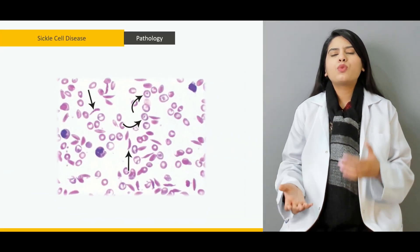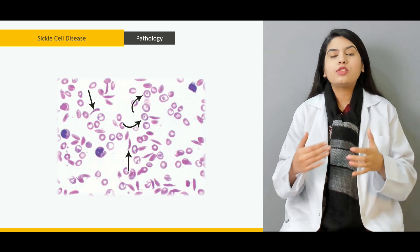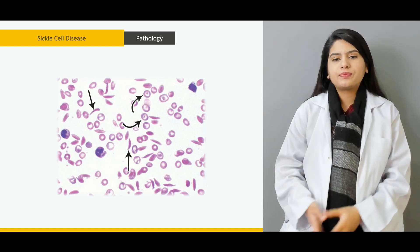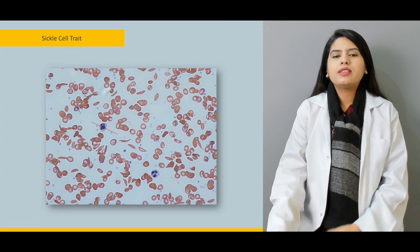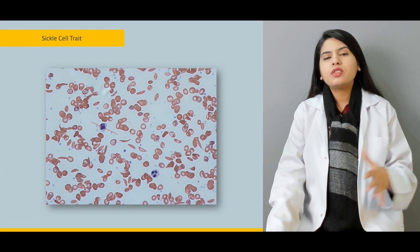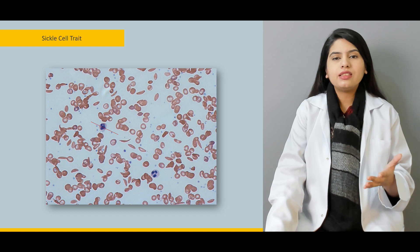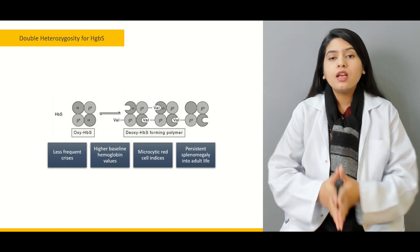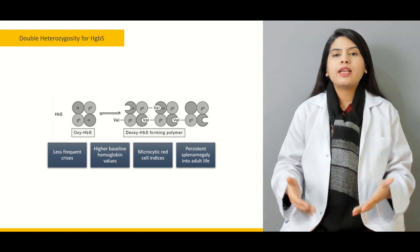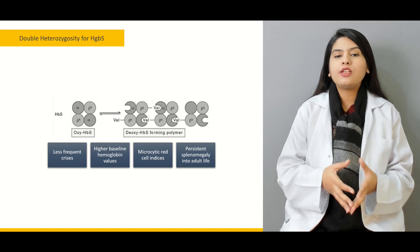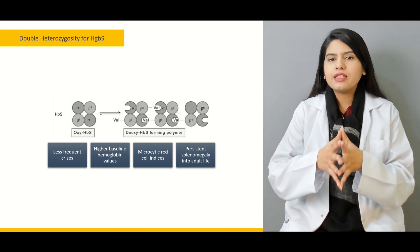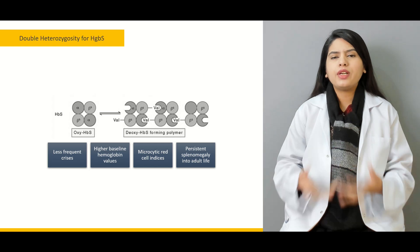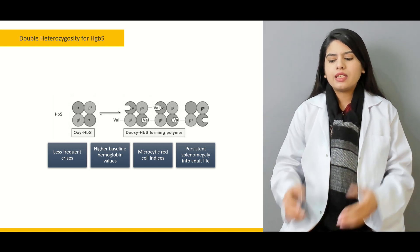Then we will move on to the pathology of sickle cell disease — how you can differentiate sickle cell disease from other red blood cell defects. We will also talk about the sickle cell trait, the difference between sickle cell trait and sickle cell disease, and double heterozygosity for hemoglobin S. We will cover the difference between homozygous, heterozygous, and double heterozygous conditions — which is more severe, what symptoms occur, and the severity of all three types.